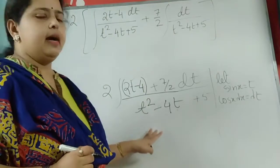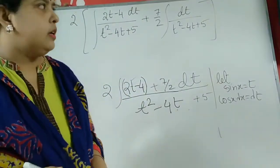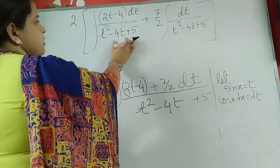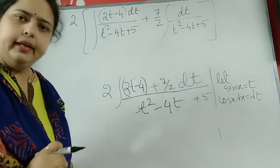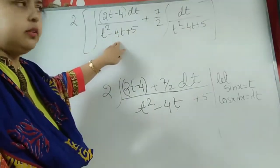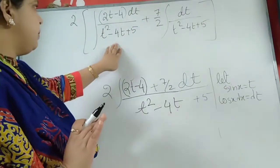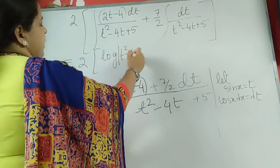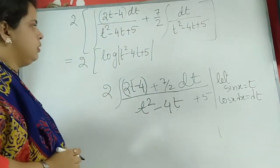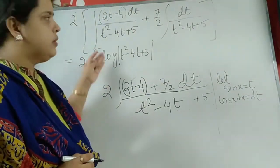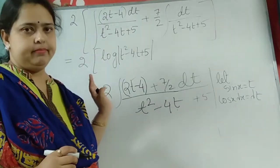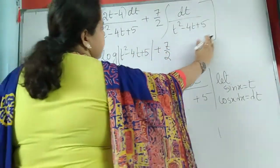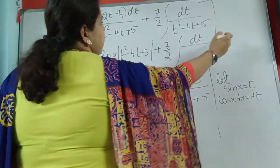And the second part: 7 by 2 outside the integration sign with dt over (t² minus 4t plus 5). This simple adjustment has given me something very easy. Now the first integral: if the denominator is u, the numerator is du, so this gives log of the denominator — that is log of (t² minus 4t plus 5). The next part involves completing the square.